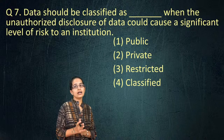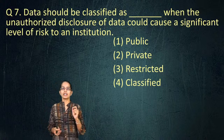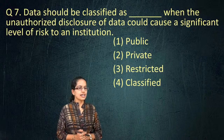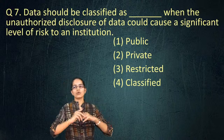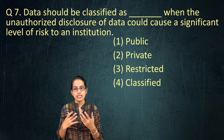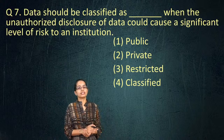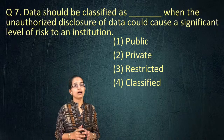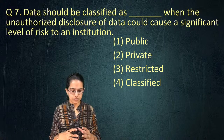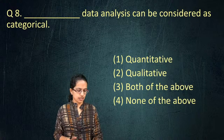The next question: how should data be classified when unauthorized disclosure of the data could cause a significant level of risk to any institution or organization? The answer is 'restricted use.' When sensitive information could be disclosed in an unauthorized or illegitimate fashion — particularly relating to national security, developments in IPS, or intellectual property rights — the data is classified as restricted.